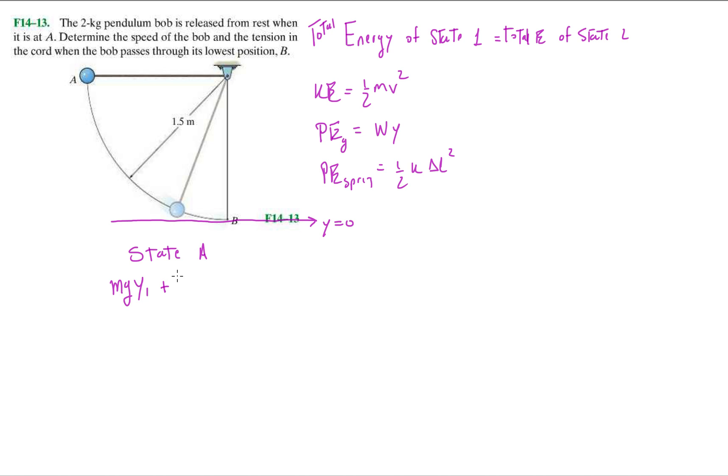Well I know it's going to be mgy1 plus all the other energies at state A, which is going to be what is the velocity or the kinetic energy? And there's no spring so we don't have to add anything else and no friction or anything like that.